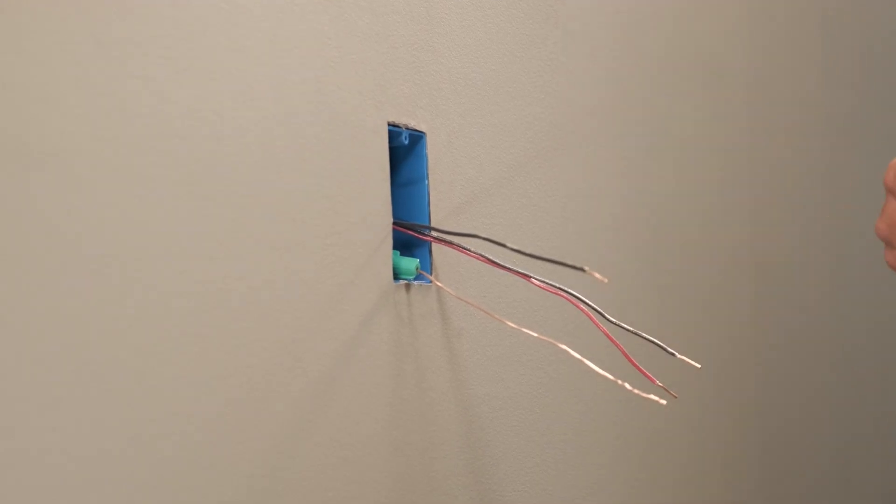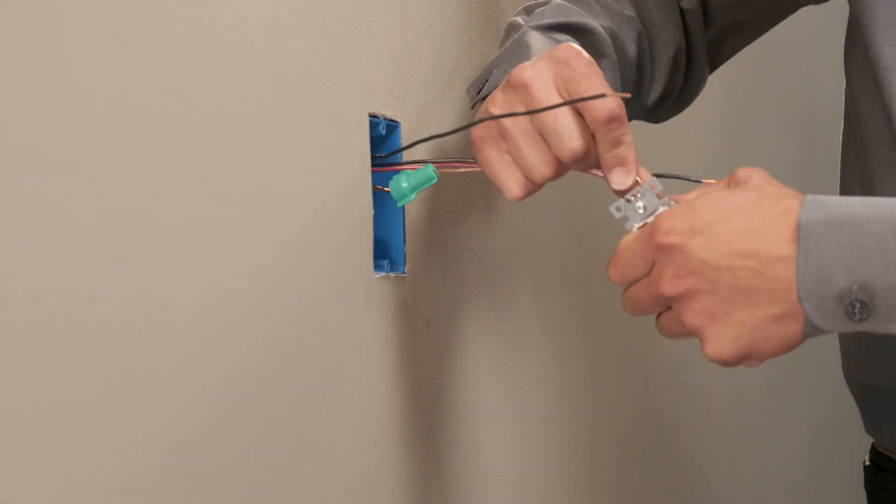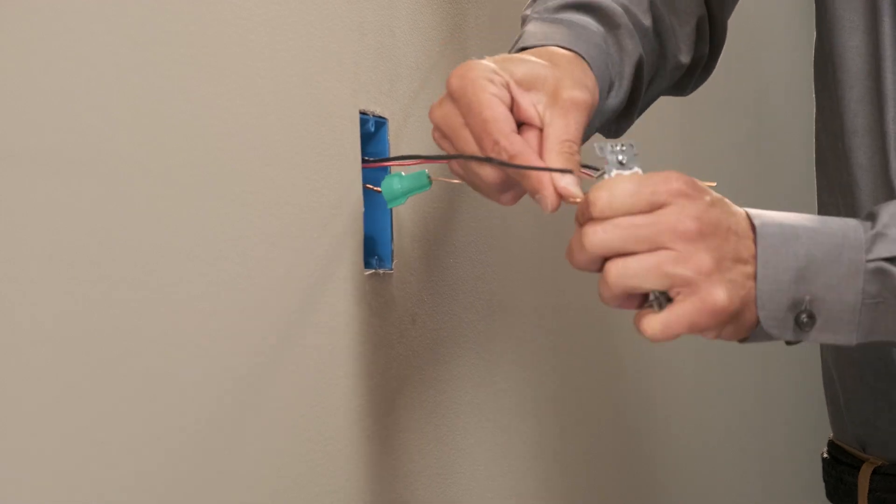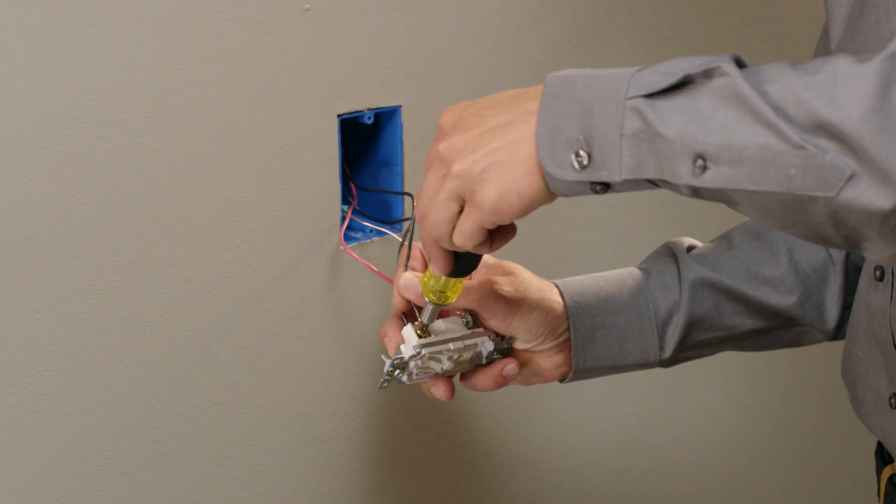First, make sure your neutral and ground wires are connected. Then take a lead from the ground bundle and wire it to the green screw on the 3-Way Switch. Attach the hot, load and neutral wires to the terminal screws.